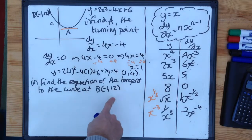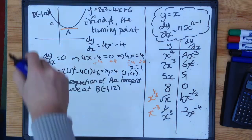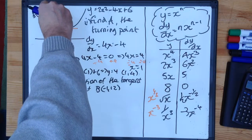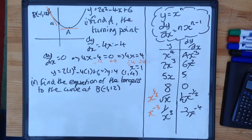Okay, so find the equation of the tangent to the curve at B minus 1, 12. Well, there's B minus 1, 12 there. The tangent is going to look like this. Now, this dy/dx thing here gives us the gradient anywhere on the curve.